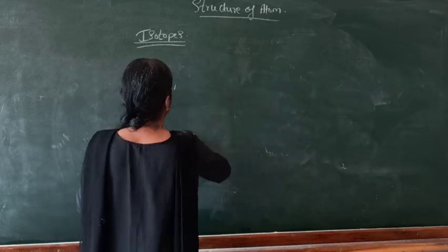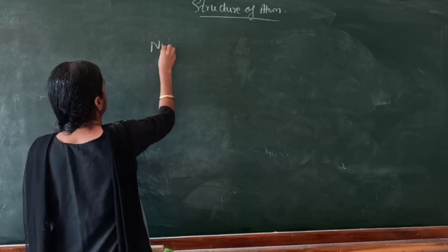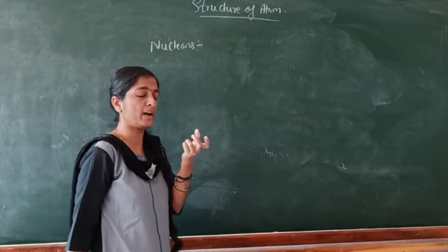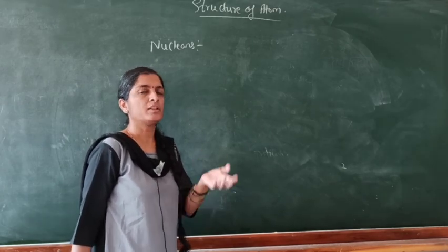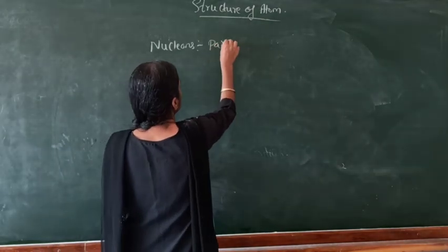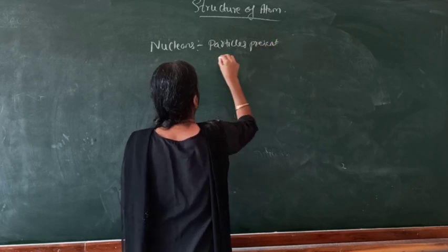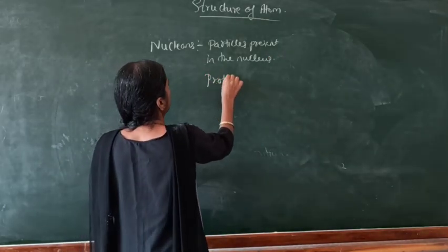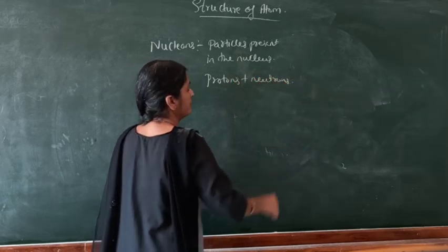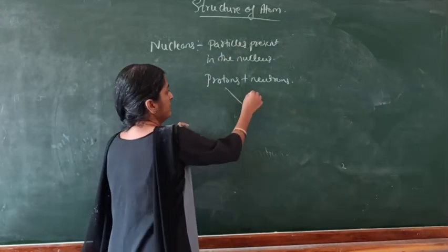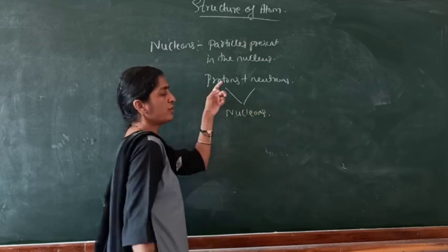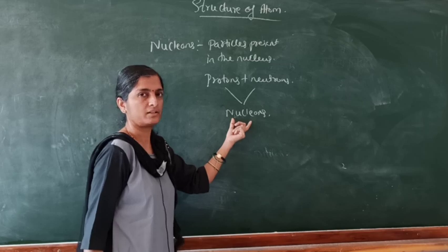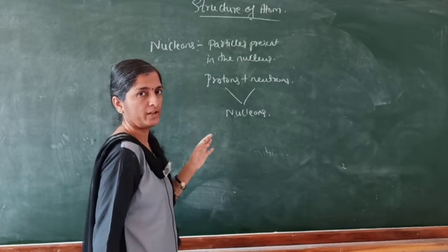One more term: nucleons. The nucleus contains protons and neutrons — these subatomic particles present in the nucleus are called nucleons. The protons and neutrons present in the nucleus together are called nucleons. That's all for today — we stop here.